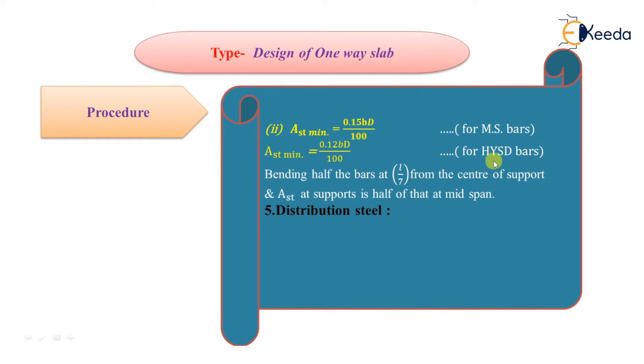What are the functions of distribution steel? Distribution steel distributes the concentrated load coming on the slab and protects it against shrinkage and temperature stresses. It also keeps the main steel bar in position.